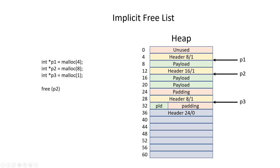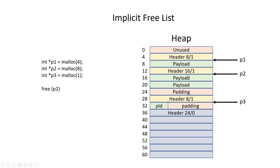One thing to notice: the header value is always going to be a multiple of eight because of the alignment requirement — 8, 16, 24, 32, 48, 64, 128, 256, and so on. When I go back to free something, it's really easy. I have a pointer to the payload; the size of the block is in the byte immediately before it. So I go back to the header, and I just need to change one bit. I have a 16 in the header with an allocated flag of one — all I need to do is change that flag to a zero and those bytes are available for use again.